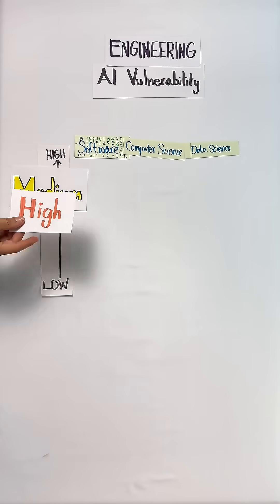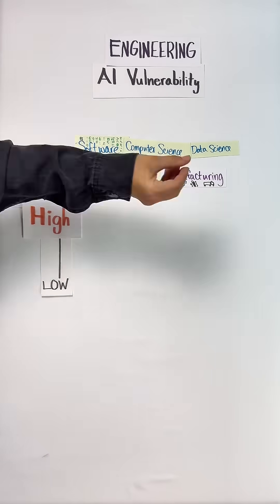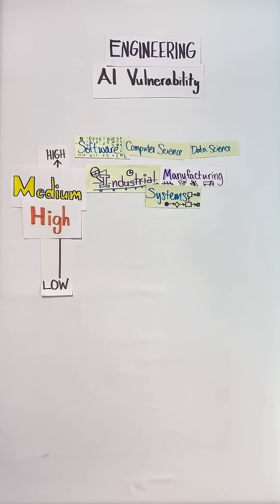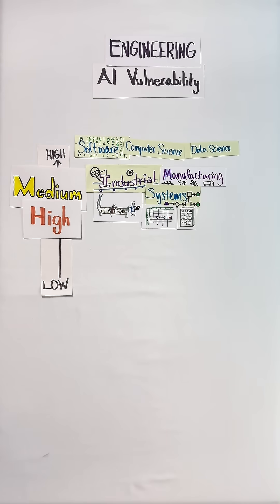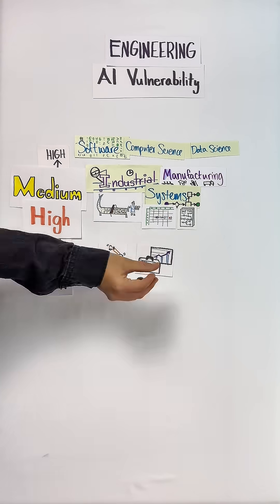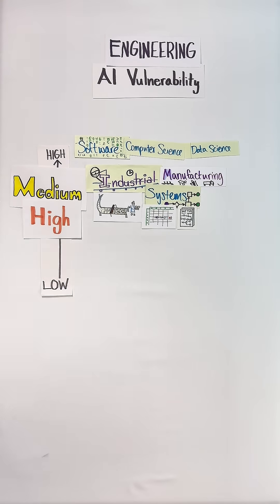At medium-high risk: fields like industrial engineering, manufacturing engineering, and systems engineering are focused on optimizing systems. These are all numerical tasks that AI is really good at. In order to AI-proof yourself if you're in these fields, you should work on honing your abilities with the kind of nuance that crops up in cross-disciplinary projects.